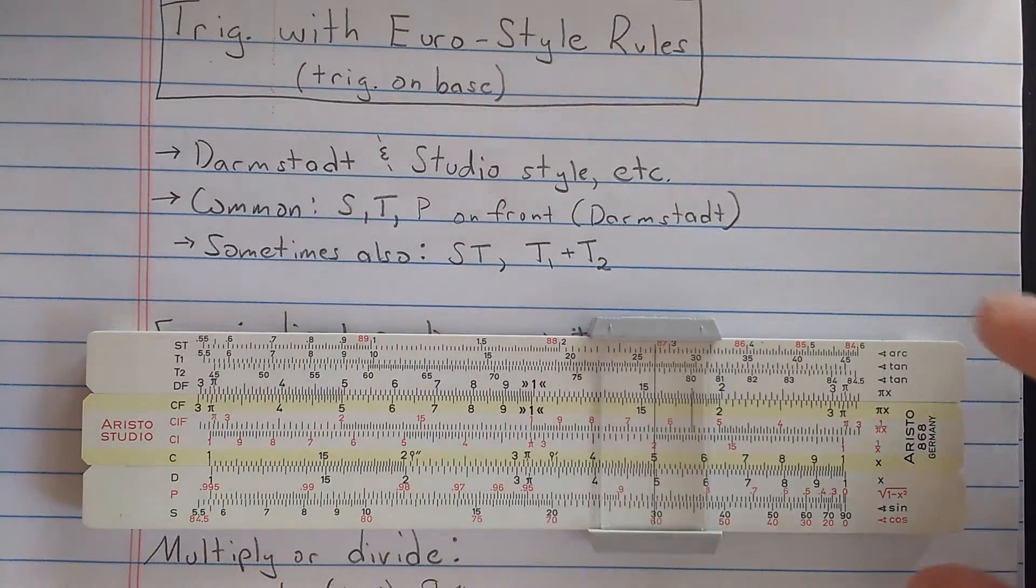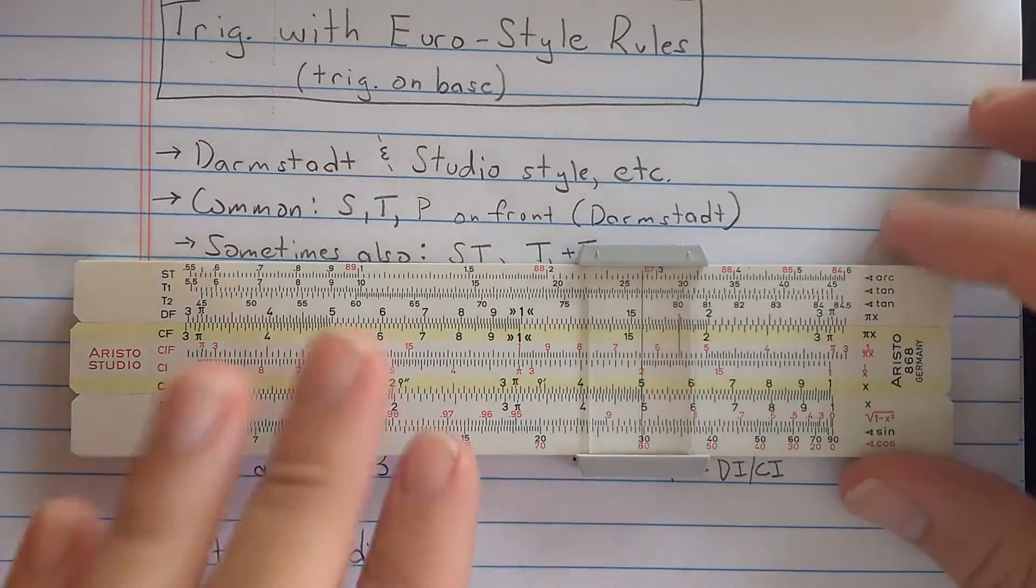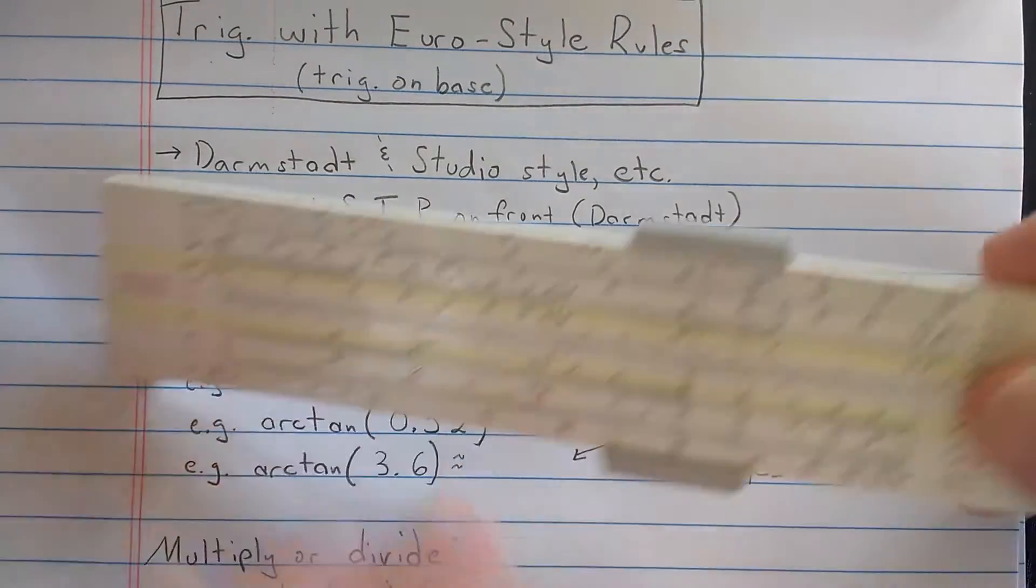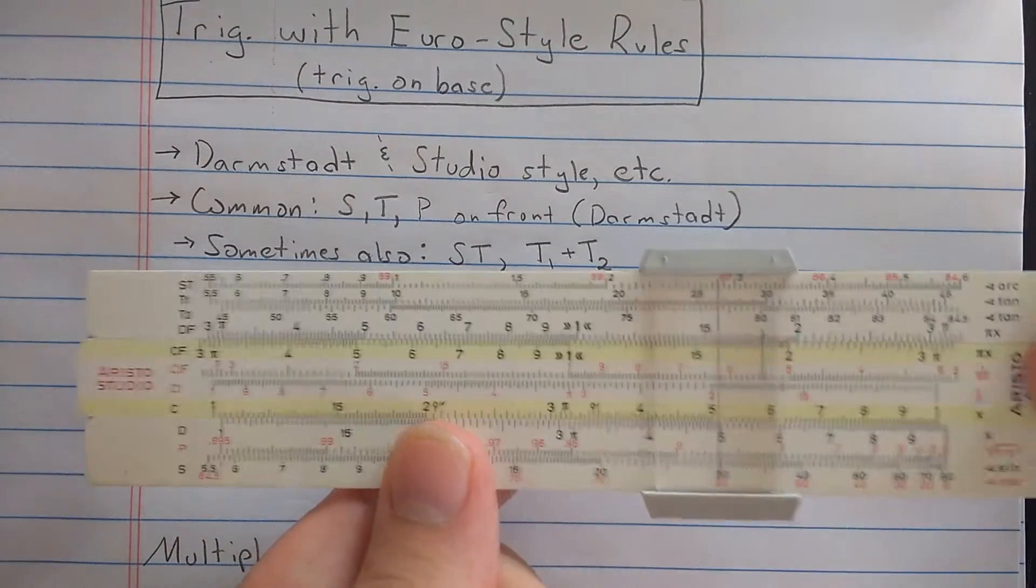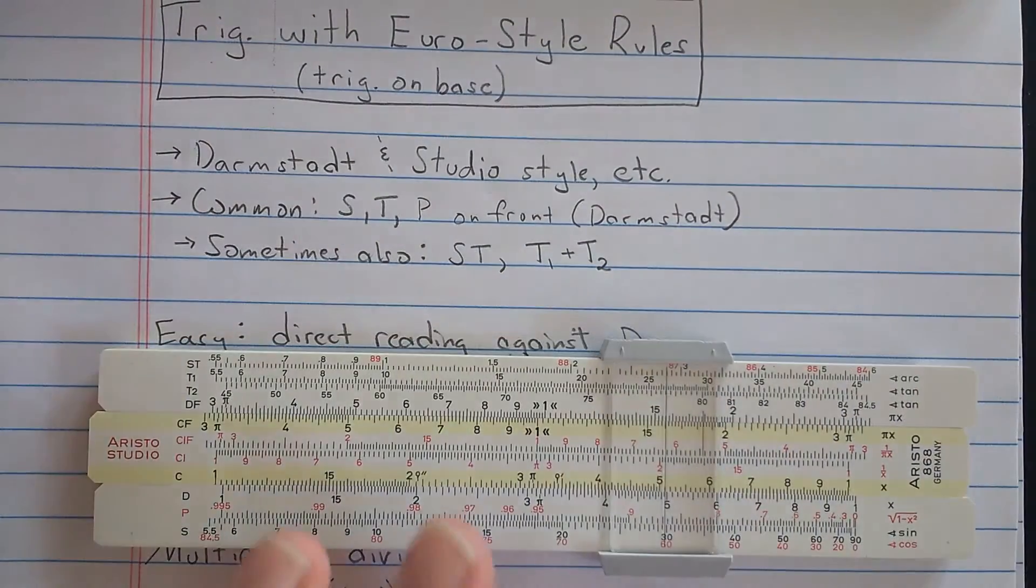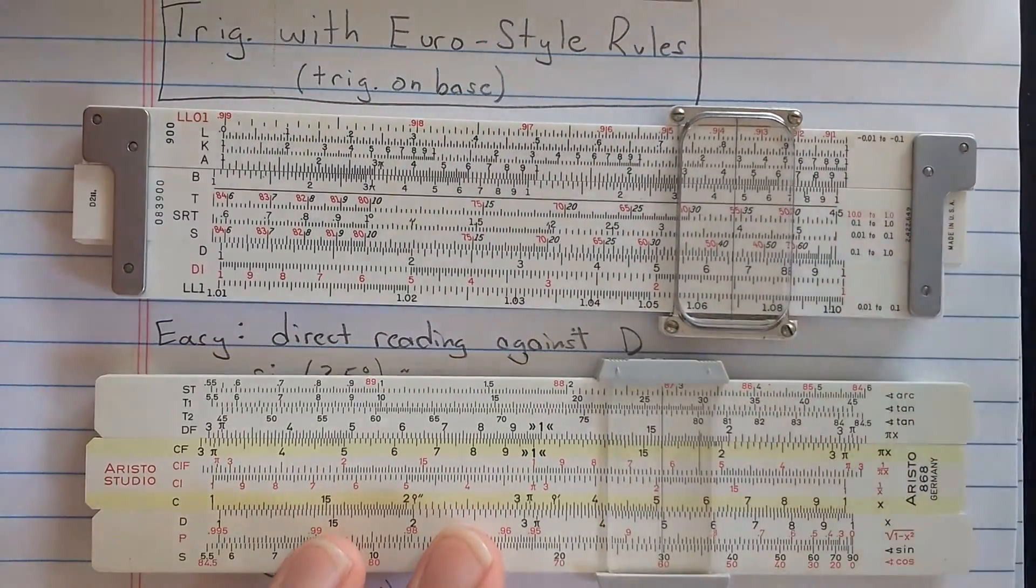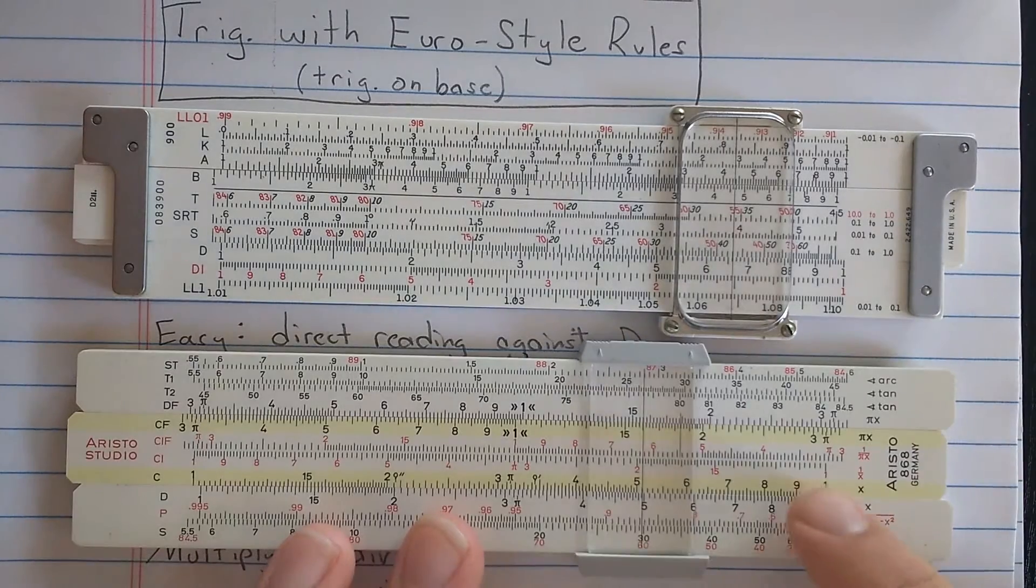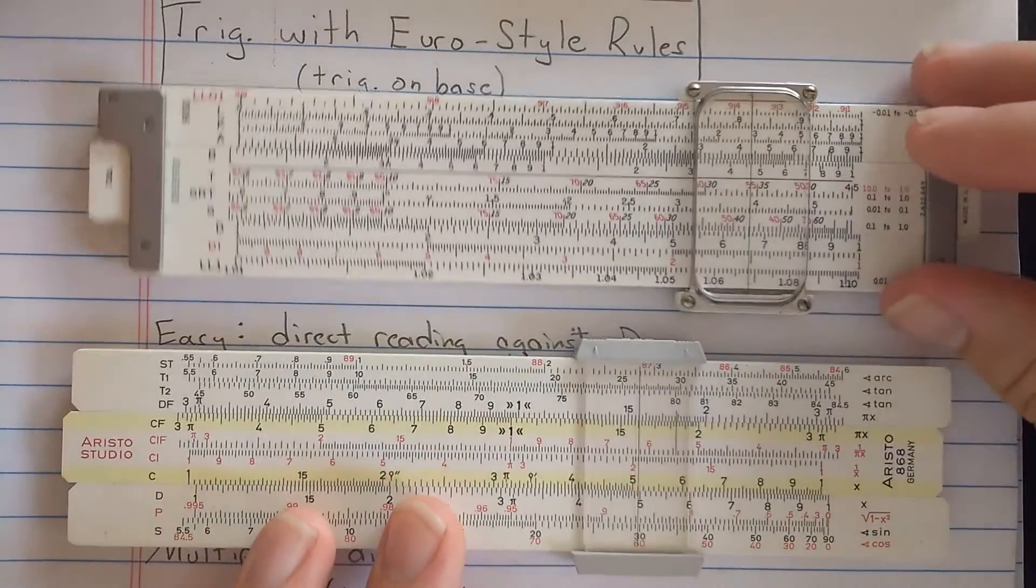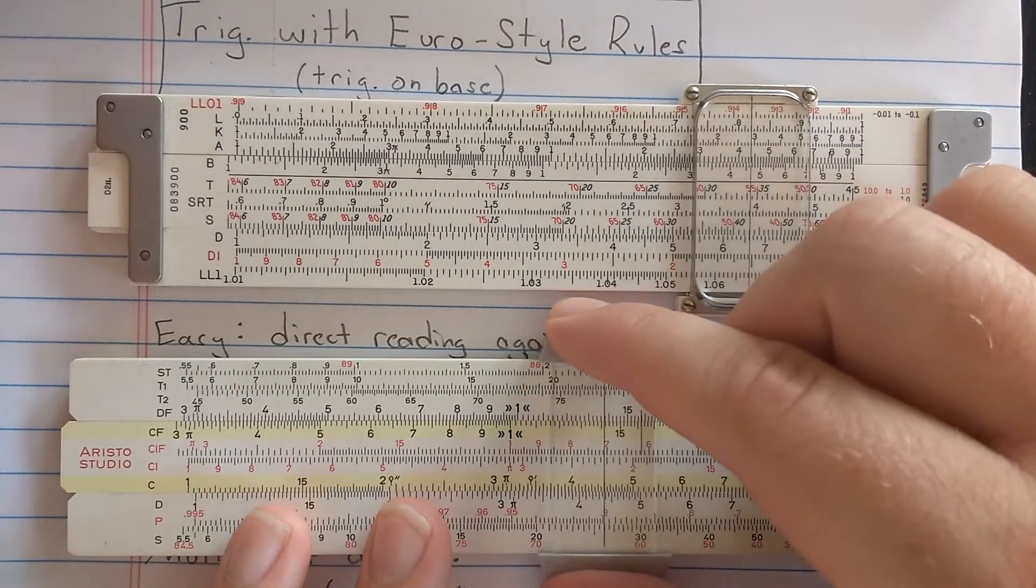All depends on your slide rule. So this Aristo Studio is a very, very typical European slide rule made in Germany. If you think of this as like the quintessential American engineering slide rule, this is probably the quintessential European engineering slide rule. Very common.